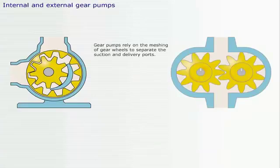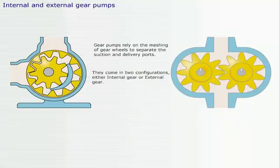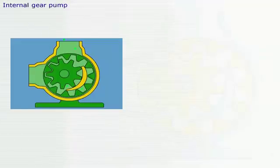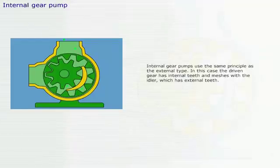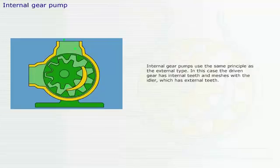Gear pumps rely on the meshing of gear wheels to separate the suction and delivery ports. They come in two configurations, either internal gear or external gear. Internal gear pumps use the same principle as the external type. In this case, the driven gear has internal teeth and meshes with the idler, which has external teeth.